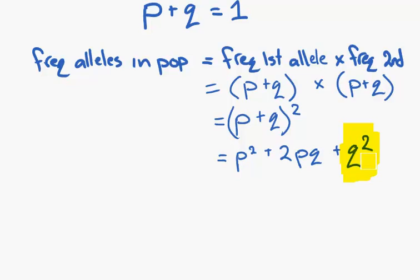What does Q squared refer to? Small a, small a, homozygous recessive. Are they easily identified in a population? Absolutely. They're the only one that is easily identified in a population. So we can now use this to work out the frequency of alleles in a living and real population.